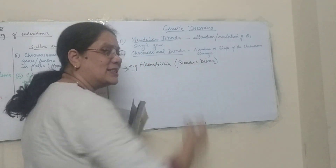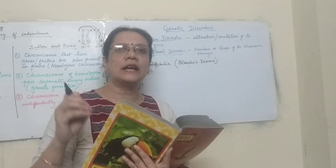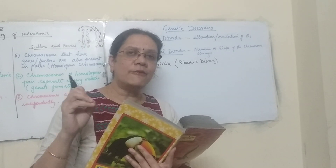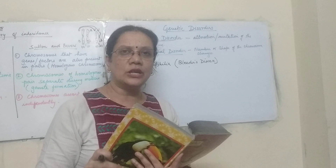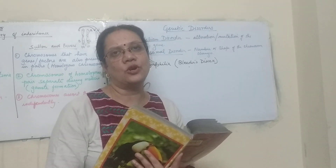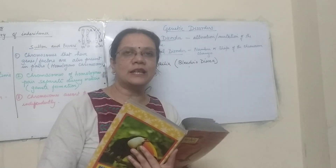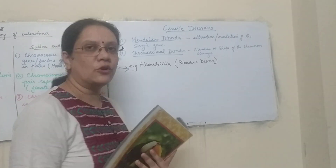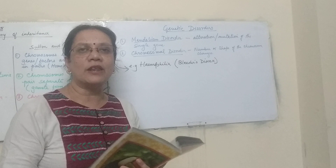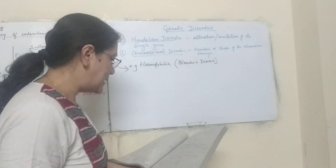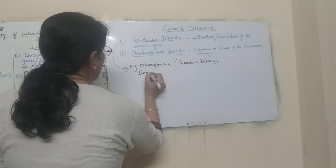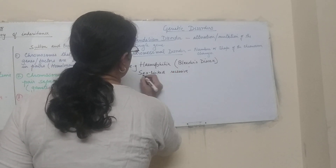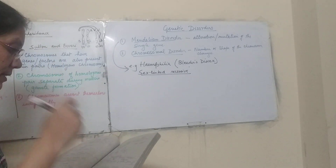There is a clotting factor responsible for clotting whenever we get a cut. If that clotting factor is not produced due to a mutation in the gene, the person will continuously bleed, which may be fatal. This disease was first seen in the royal family, so it is also known as the royal disease. Hemophilia is a sex-linked recessive disorder.